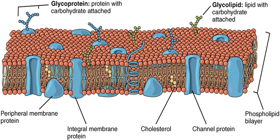In the plasma membrane, flippases transfer specific phospholipids selectively, so that different types become concentrated in each monolayer. Using selective flippases is not the only way to produce asymmetry in lipid bilayers, however. In particular, a different mechanism operates for glycolipids — the lipids that show the most striking and consistent asymmetric distribution in animal cells.